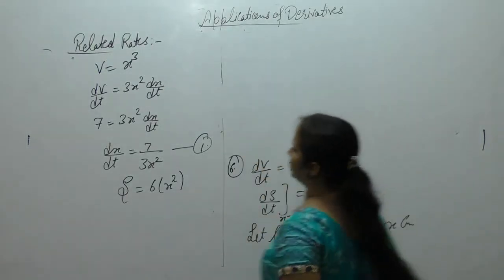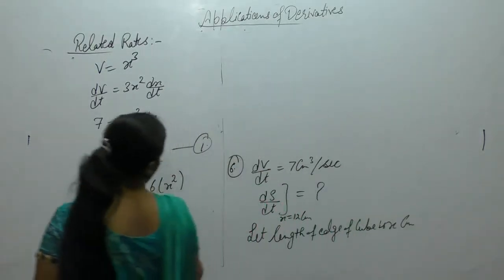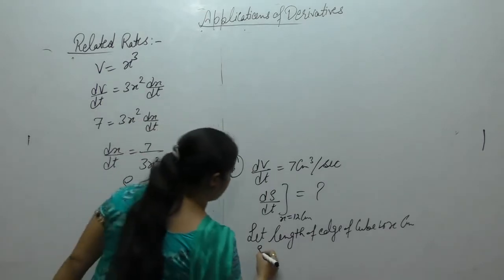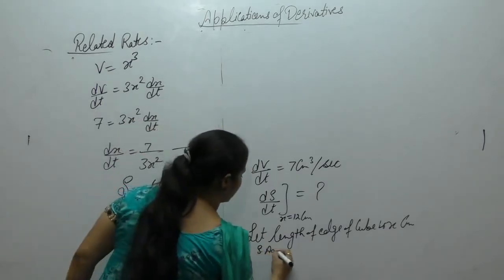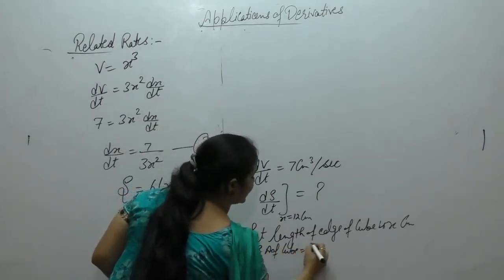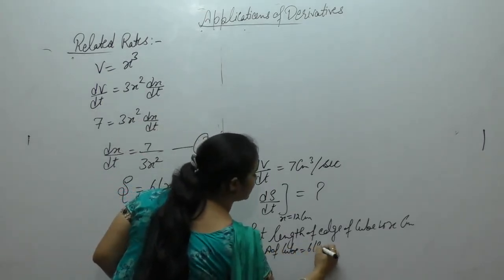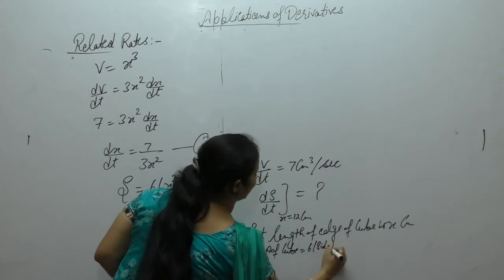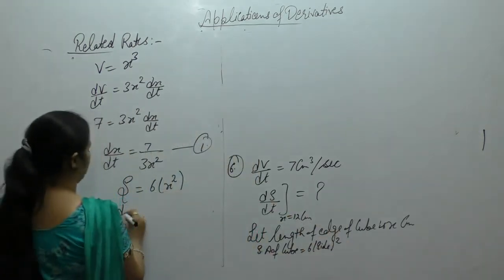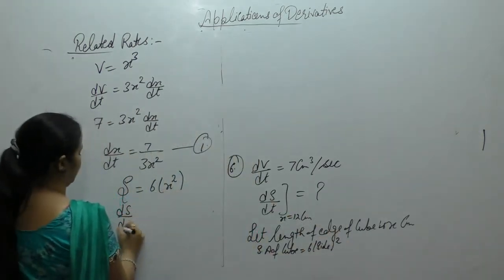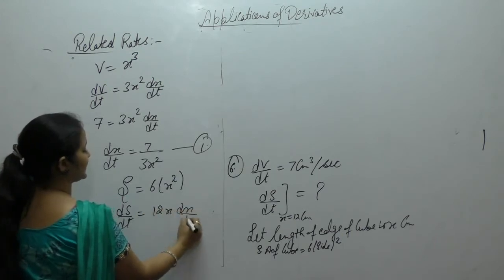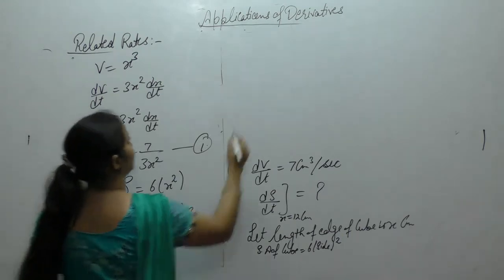Note this formula: surface area of cube is 6 into side square. Now differentiate with respect to t.